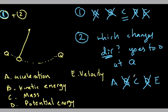Mass—that's also scalar, it's just a number that you have. So now we've eliminated all the scalar quantities. Which changes direction and which one goes to zero at Q?